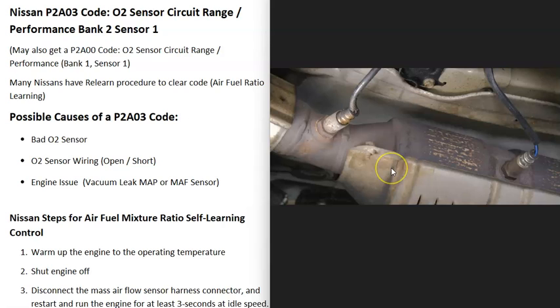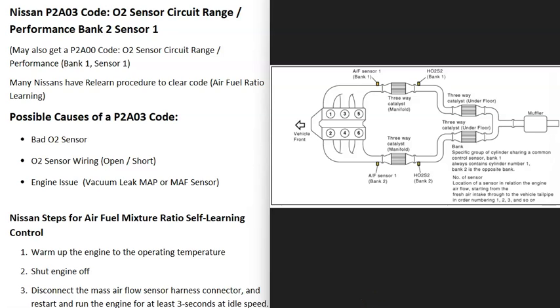When you get a P2A03 code, the computer's seeing a problem with the Sensor 1 upstream oxygen sensor. If you have a V6 or V8 engine, you have two banks. Bank 1 is always the side of the engine with the number one cylinder, so if you find the number one cylinder on your engine, that's Bank 1, and the opposite of that would be Bank 2.